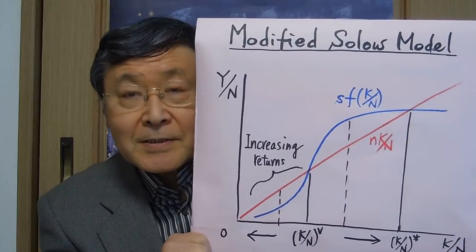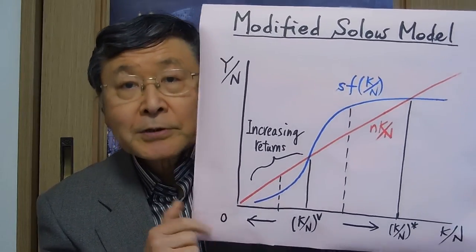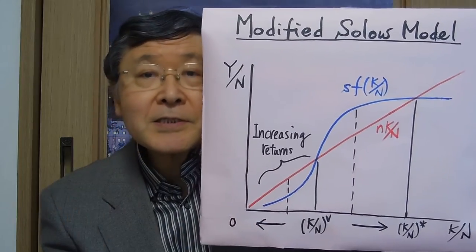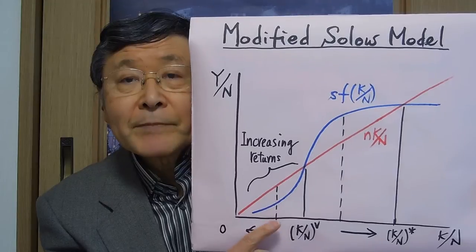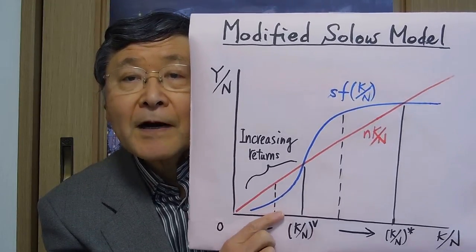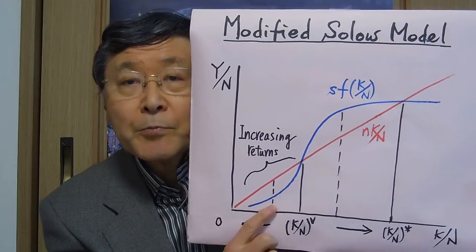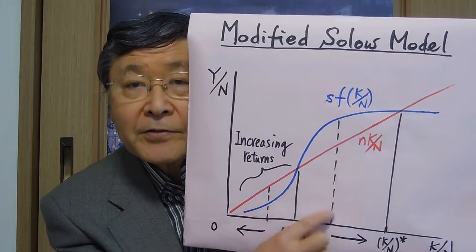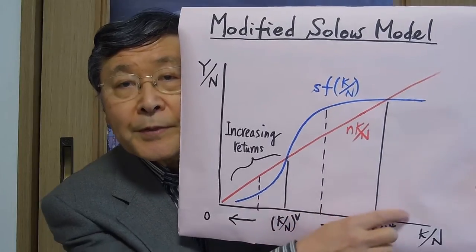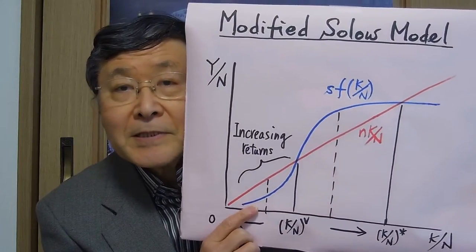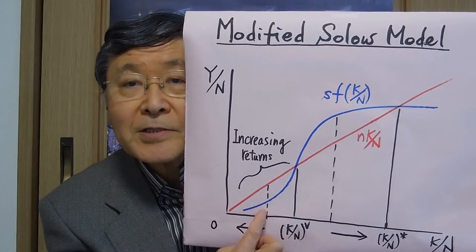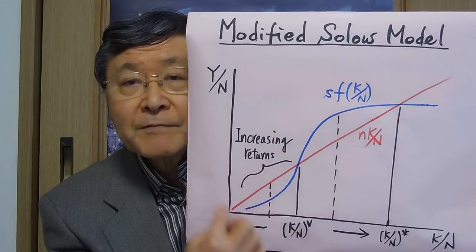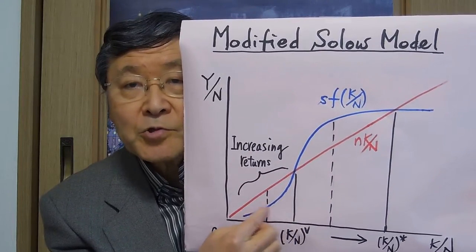This analysis has an interesting policy implication. In assisting or aiding a developing economy, we had better give a large amount of assistance — that is called the big push — to change the initial condition beyond this critical value, so that the country will continue moving up. A little bit of assistance wouldn't help, because if the economy still remains in the vicious cycle range, it will shrink again. This big push idea is quite important in considering international assistance.